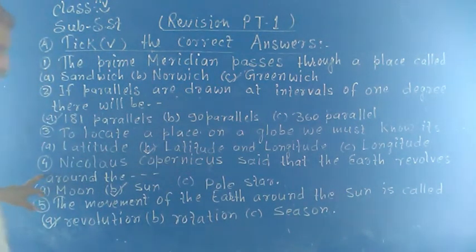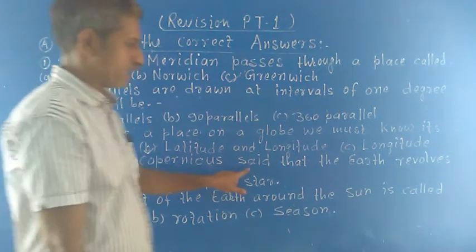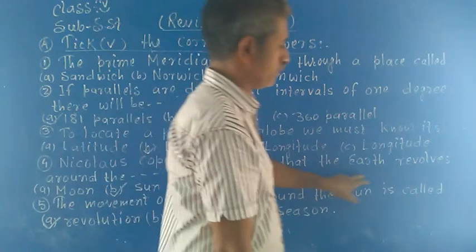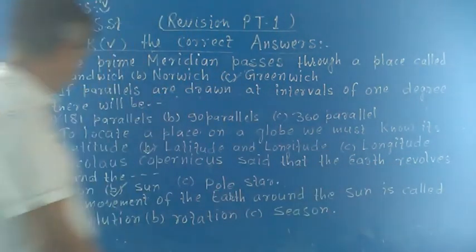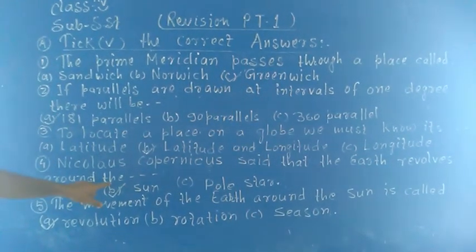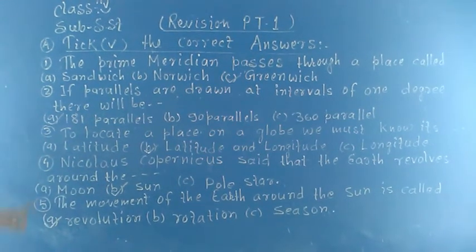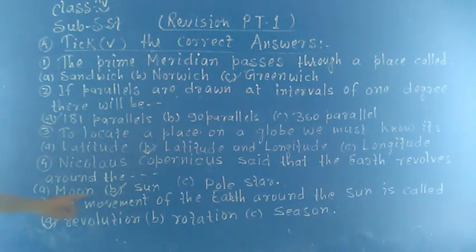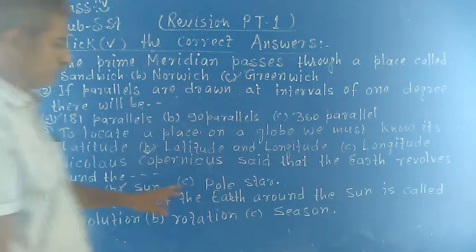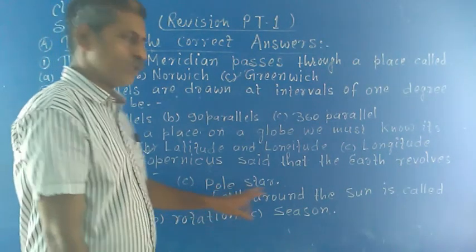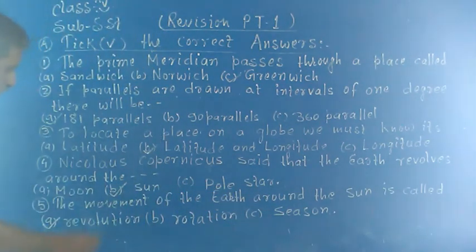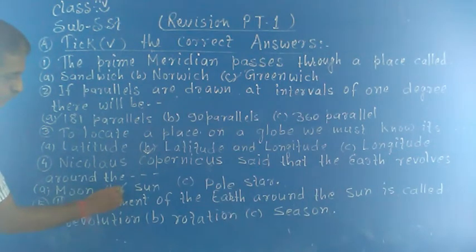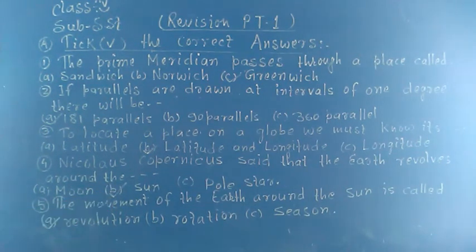Question number 4: Nicolaus Copernicus said that the earth revolves around the. Options: A, moon; B, sun; C, pole star. Right answer is sun.